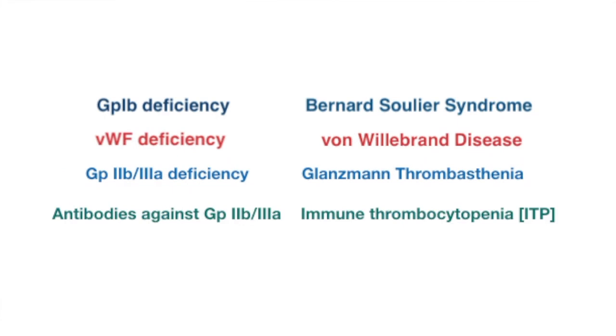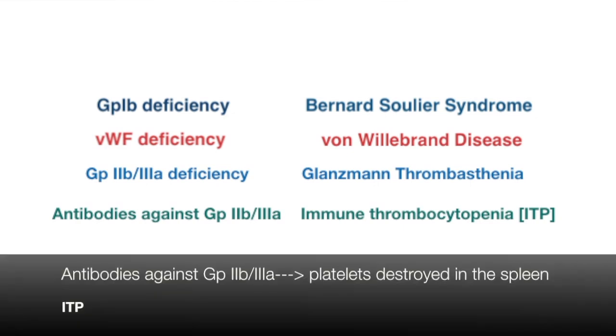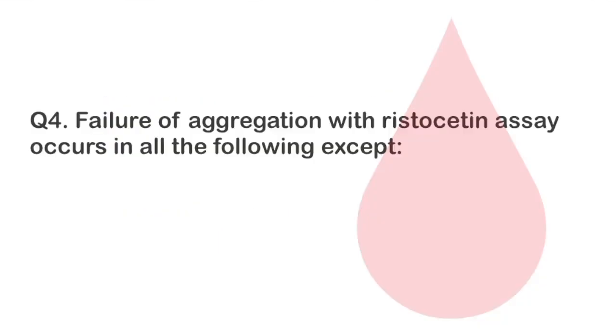In immune thrombocytopenia, these antibodies attack the platelets which are then destroyed in the spleen. Question 4.